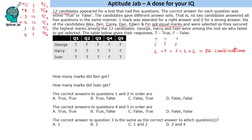If we assume the 6 selected candidates got 2 marks, then the remaining candidates can get 1 or 0 marks. But there are 3 candidates — George, Harry, Ivan — and 5 true/false questions. It is not possible to restrict all of them to just 1 correct response given the overlapping answer patterns, and some would end up with 2 marks, contradicting the assumption that the selected group had the highest score. So this means the 6 selected candidates must have got 3 marks. The remaining candidates could get 2, 1, or 0 marks. Therefore, Ben got 3 marks.